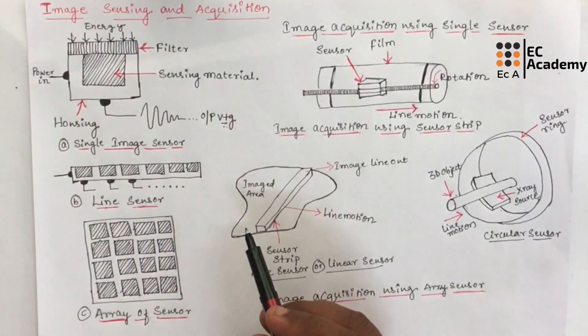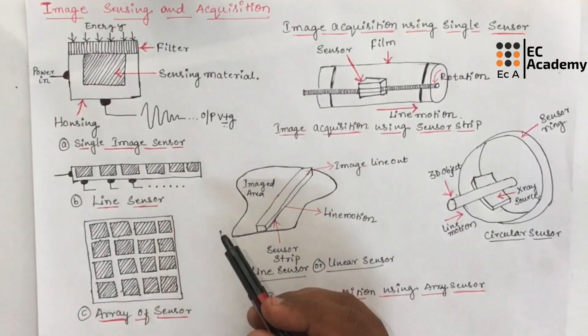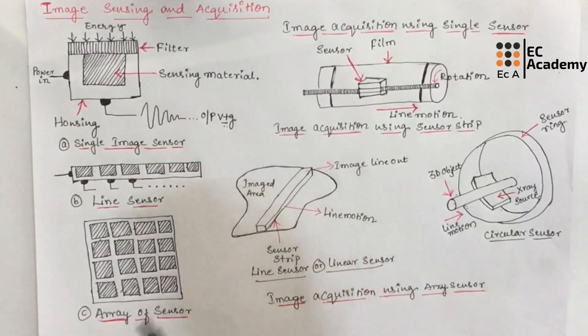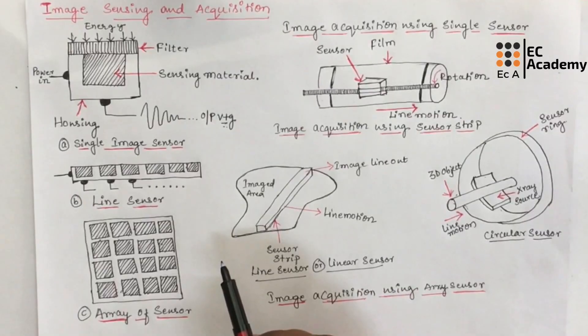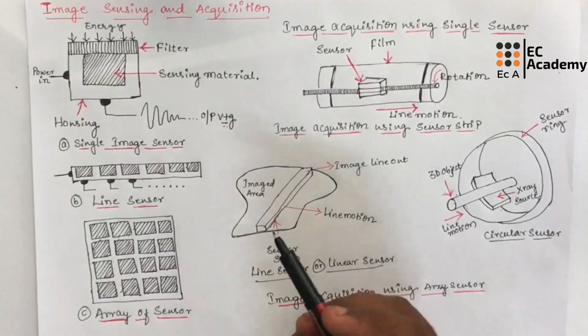If we say the illumination energy is reflected back, for that we can take an example as light that is reflected from a planar source. If we say the illumination energy is transmitted through an object, for that we can take an example as X-ray that is passing through the patient's body to generate an X-ray film.